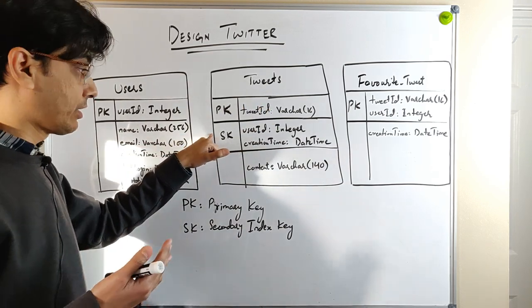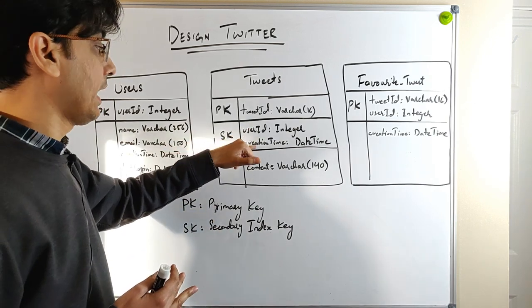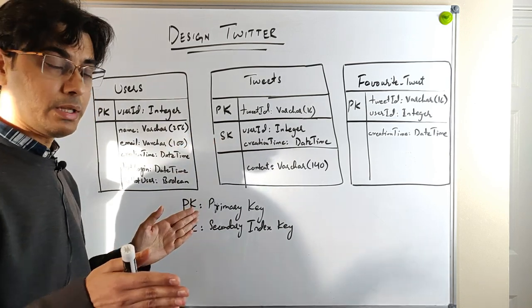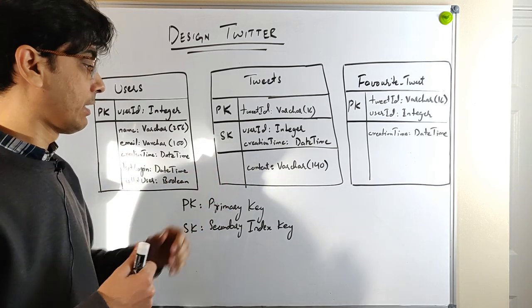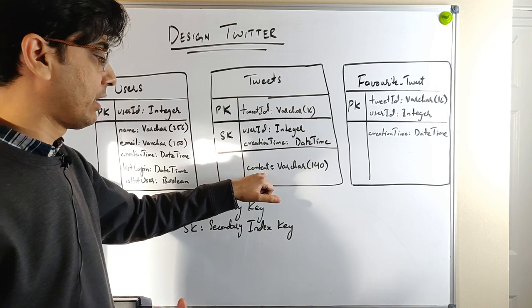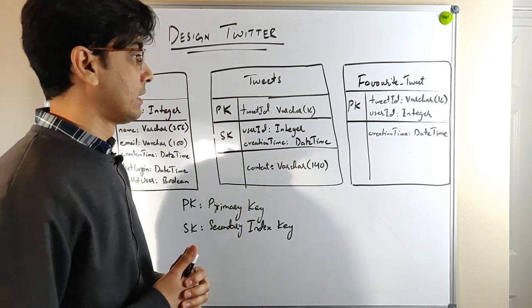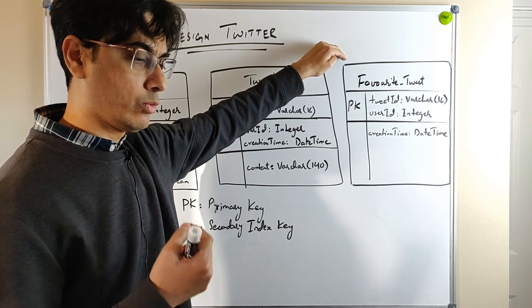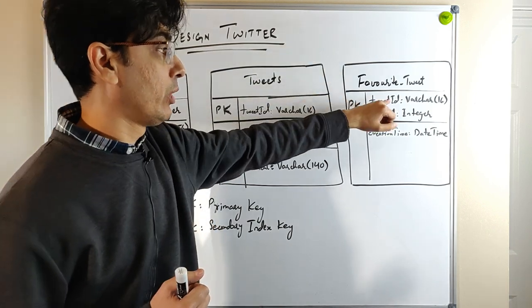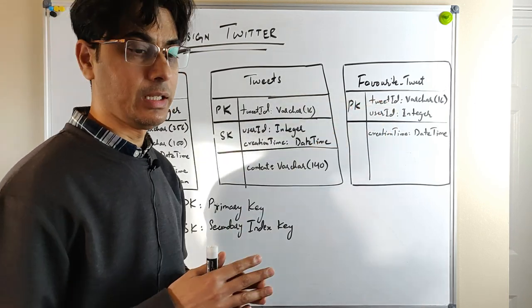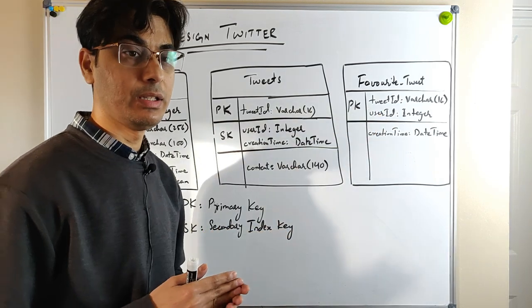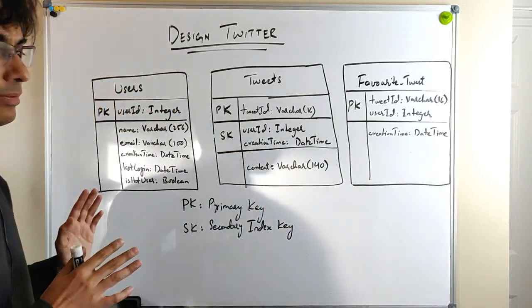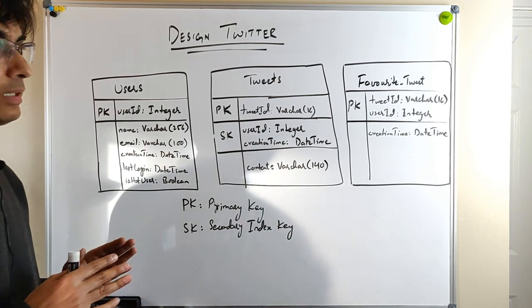The second table is the tweets table, with primary key tweet ID and a secondary index key comprising user ID and creation time — used to query tweets from a particular user in descending order of creation time. The content column holds up to 140 characters. The third table is the favorite tweet table, tracking all tweets a user has liked, with a composite primary key of tweet ID and user ID, plus a creation time.